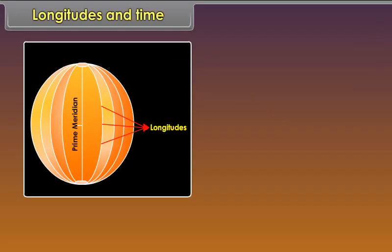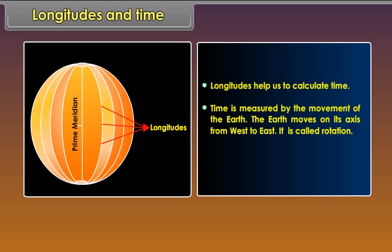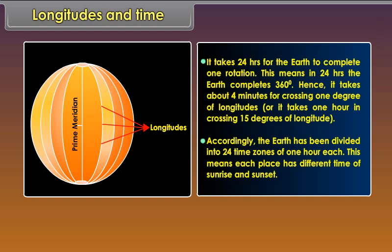Longitudes and time: Longitudes help us to calculate time. Time is measured by the movement of the earth. The earth moves on its axis from west to east — this is called rotation. It takes 24 hours for the earth to complete one rotation, meaning in 24 hours the earth completes 360 degrees. Hence, it takes about 4 minutes for crossing one degree of longitude, or one hour in crossing 15 degrees of longitude. Accordingly, the earth has been divided into 24 time zones of one hour each.